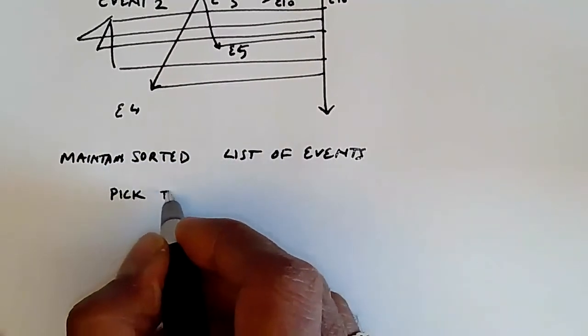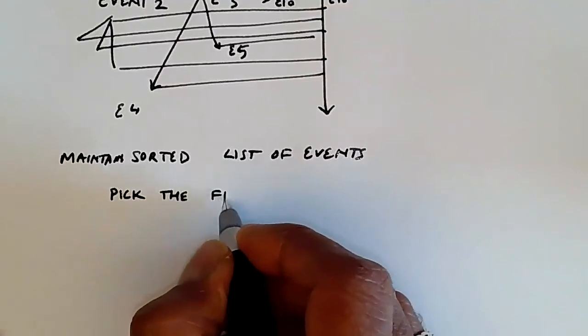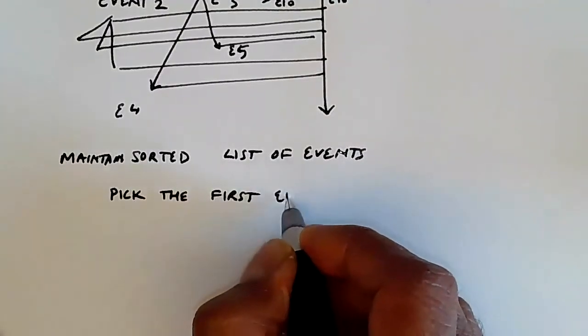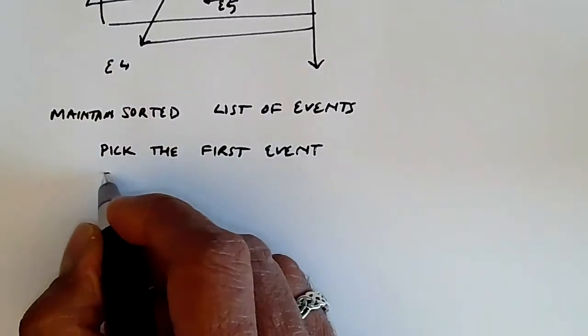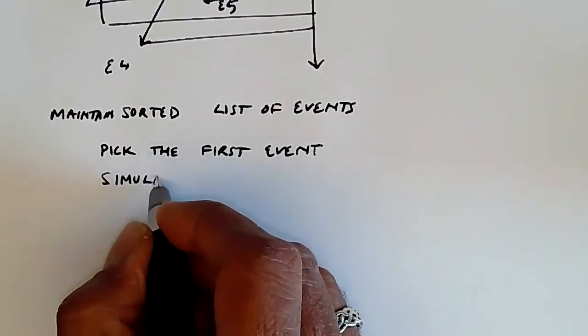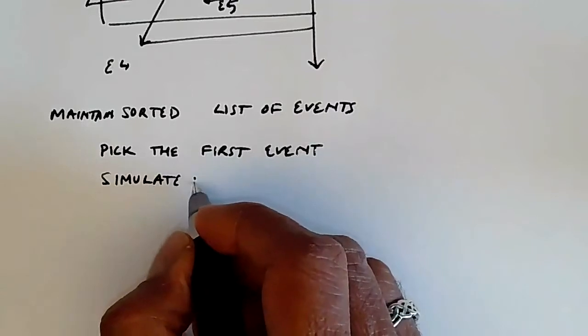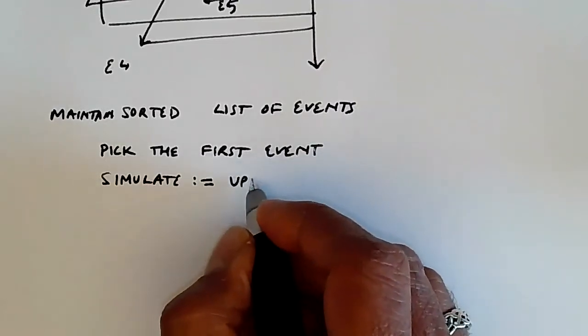We pick the first event, and then we simulate that event. We simulate the event, which means update the state space.